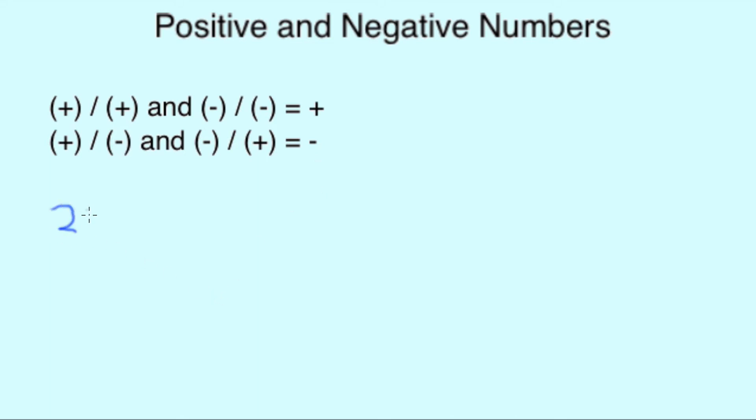So for example, positive 2 divided by positive 2 is going to give you a positive result of 1. However, positive 2 divided by negative 2 is going to give you a negative result of minus 1.